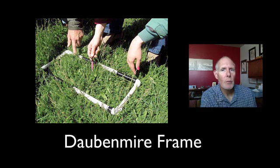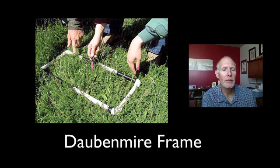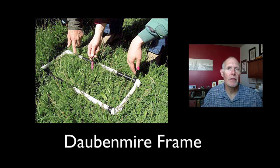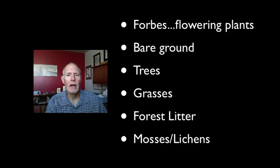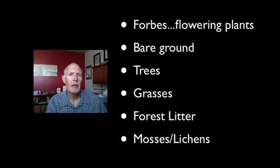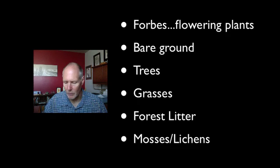One of the ways we'll do that is to use what we call a Daubenmire frame — basically some plastic tubing. We're going to put that on the ground and take a look at the plants that are actually growing inside of that frame, get an idea of the growth that's in there, and then take some measurements and collect some data. We'll be looking for plants like forbs, which are flowering plants, as well as bare ground, trees, grasses, forest litter, and mosses and lichens. I actually have data from the last 20 years when my middle school students have done this similar activity. When we get back to class after the trip, we'll take a look at that data and see if we can make sense of what's going on. That's the plan — should be a fun time to go down and see what we can learn.